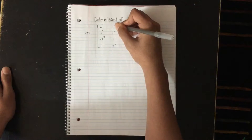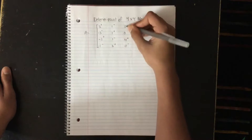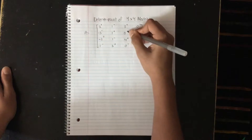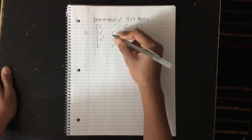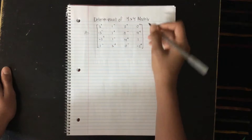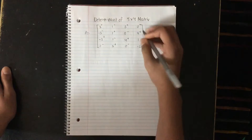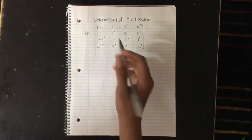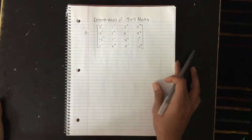Make sure it's alternating for all rows. So now it's positive, negative, positive, then positive, negative, positive, then negative, positive. Basically, it's a checkerboard pattern with positive and negative signs.